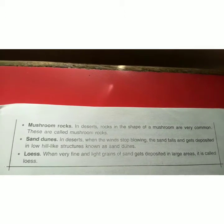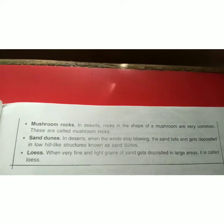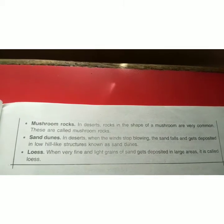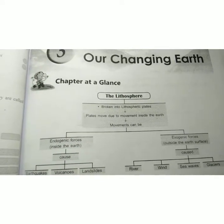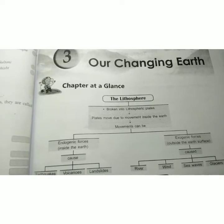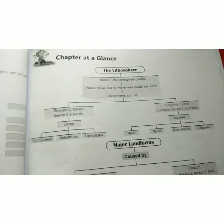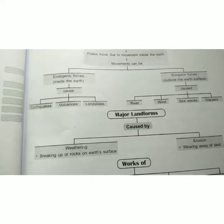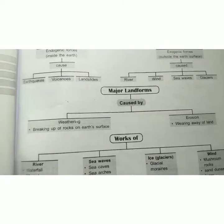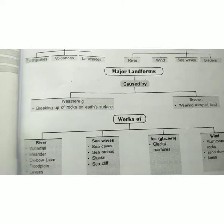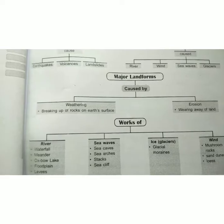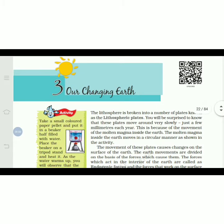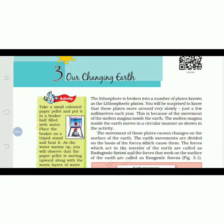These are the glossary words which you have to write down in your notebook after writing down the chapter heading. These are the topics we are going to learn in this chapter: the first topic is the lithosphere, then the major landforms, and then the works of rivers, sea waves, ice, and wind. So here we start our third chapter, 'Our Changing Earth,' from your textbook.